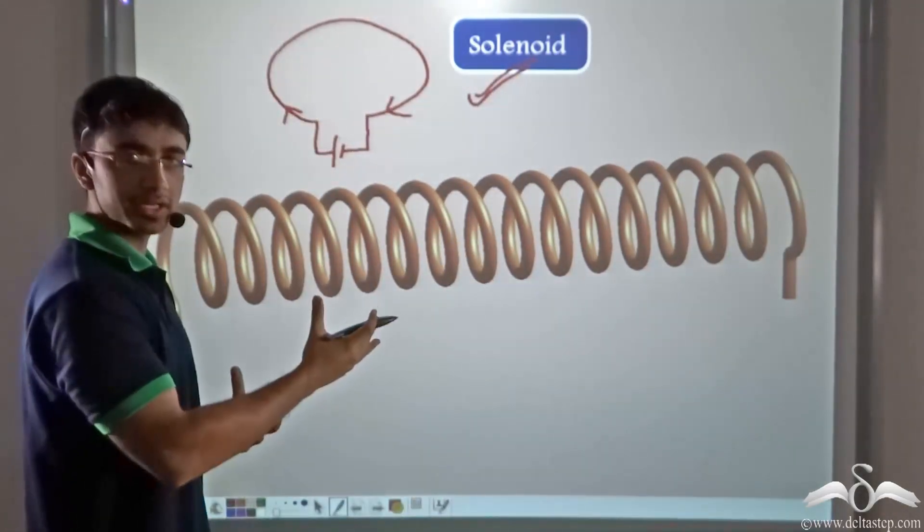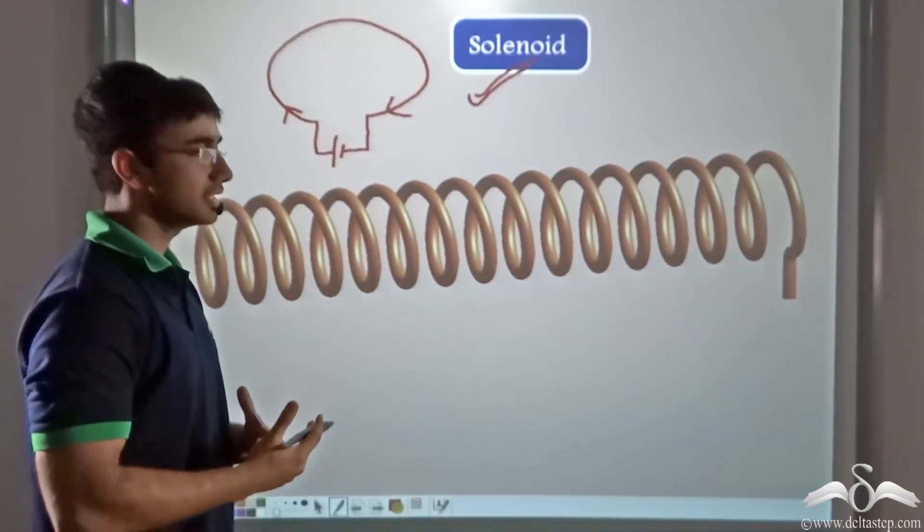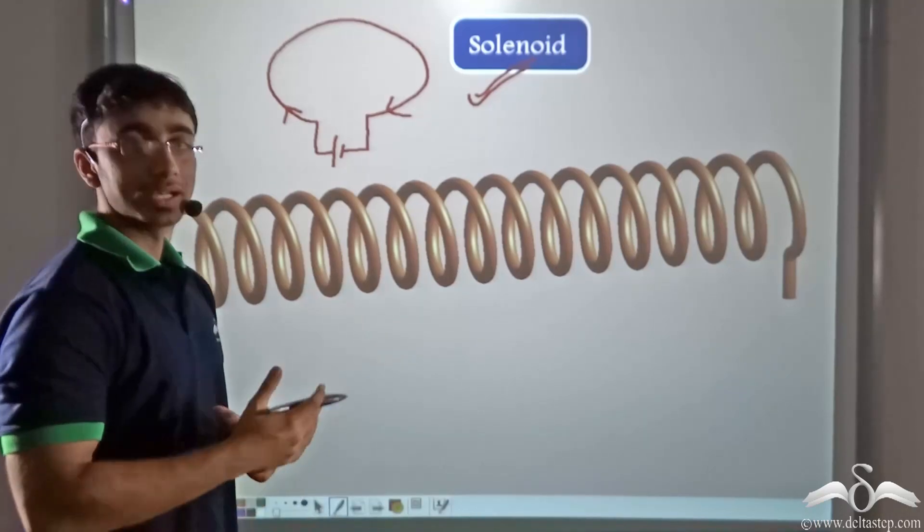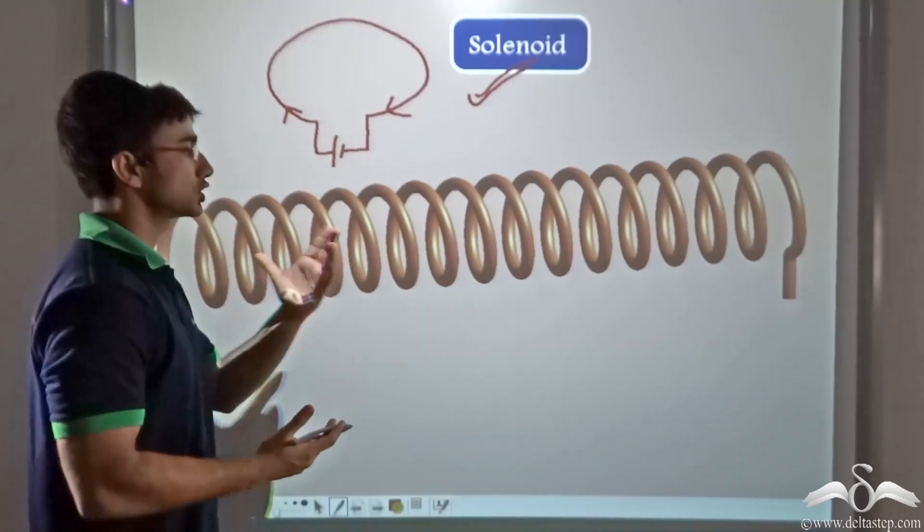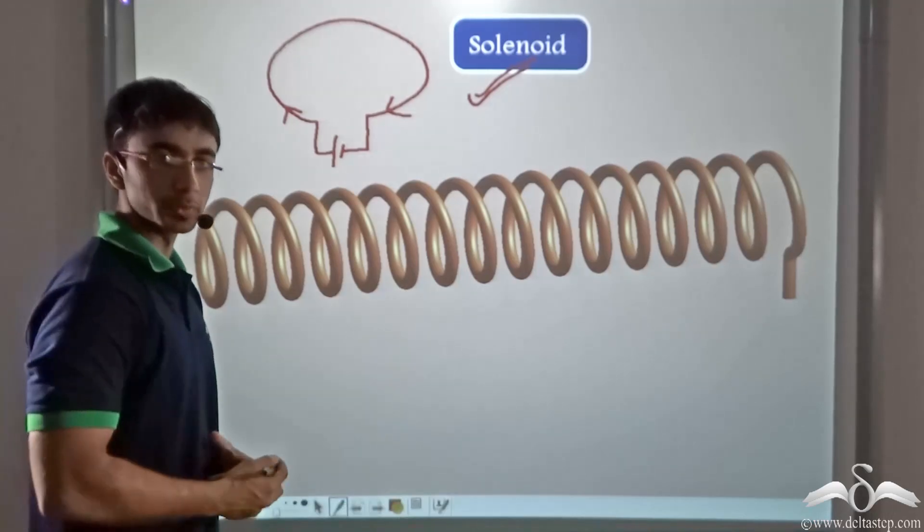So when current flows through the solenoid, a definite magnetic field is generated. So let us see how we can find out the direction of the magnetic field around the solenoid when current flows through it.